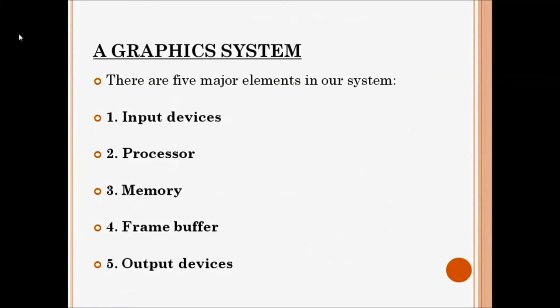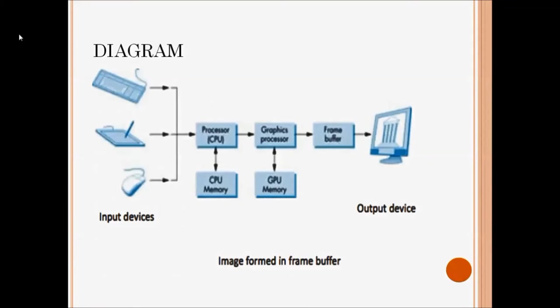Your graphic system is the same as your personal computer except for one component — the frame buffer. All other components are the same, but your graphic system contains an extra component: the frame buffer. Input devices can be a keyboard, data tablet, or a mouse.